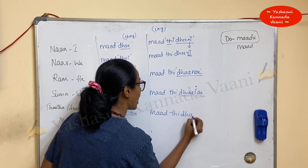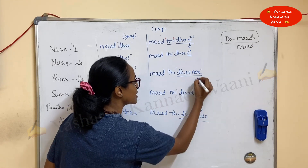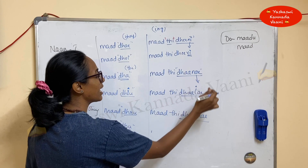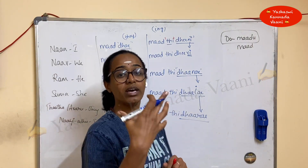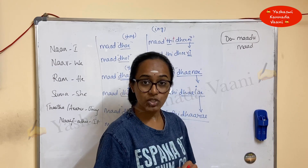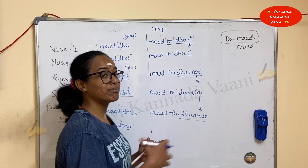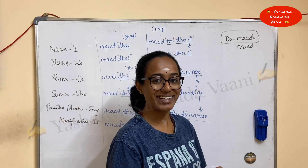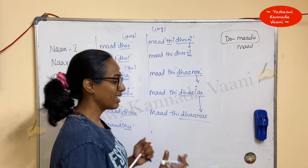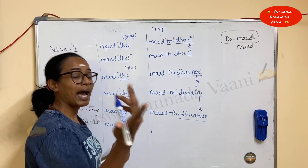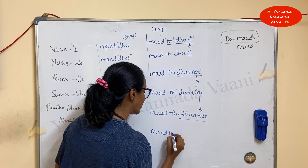So observe: the last sounding changes — 'ne,' 'le,' and 're.' 'Ti' remains the same; 'daare' is used for seniors, strangers, as well as groups. For example, 'students maad ti daare' means students are doing it, students are working, students are walking.